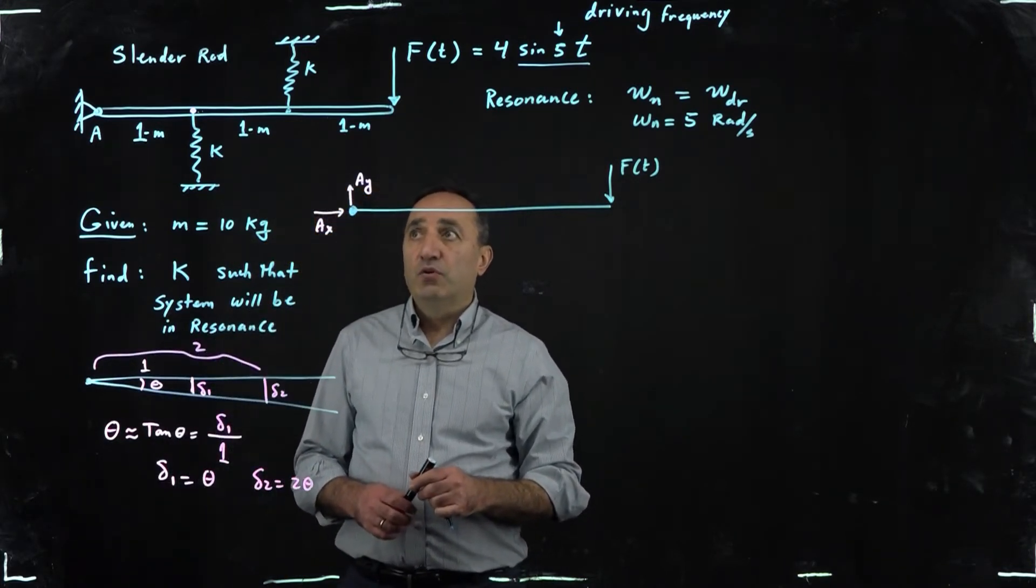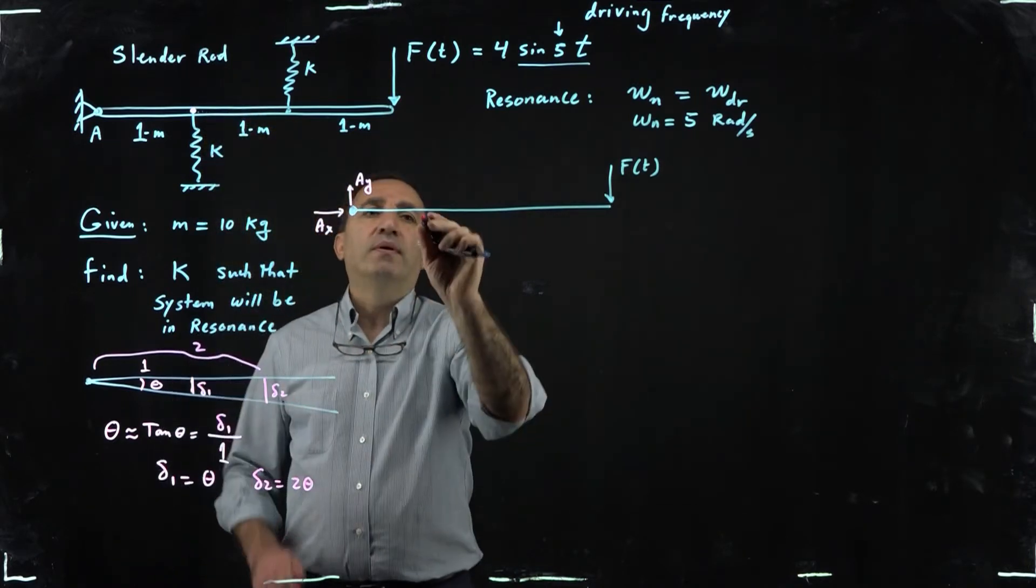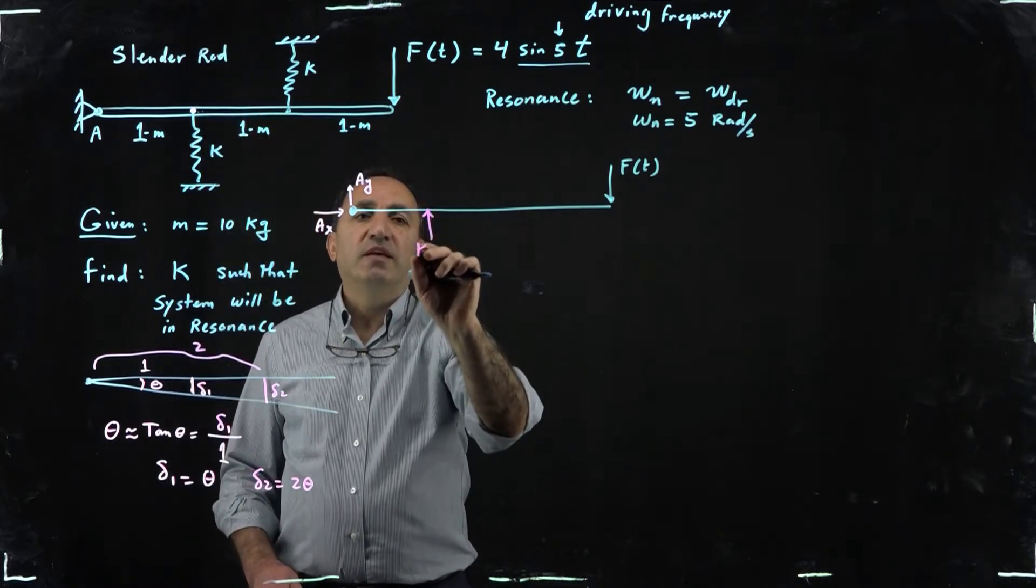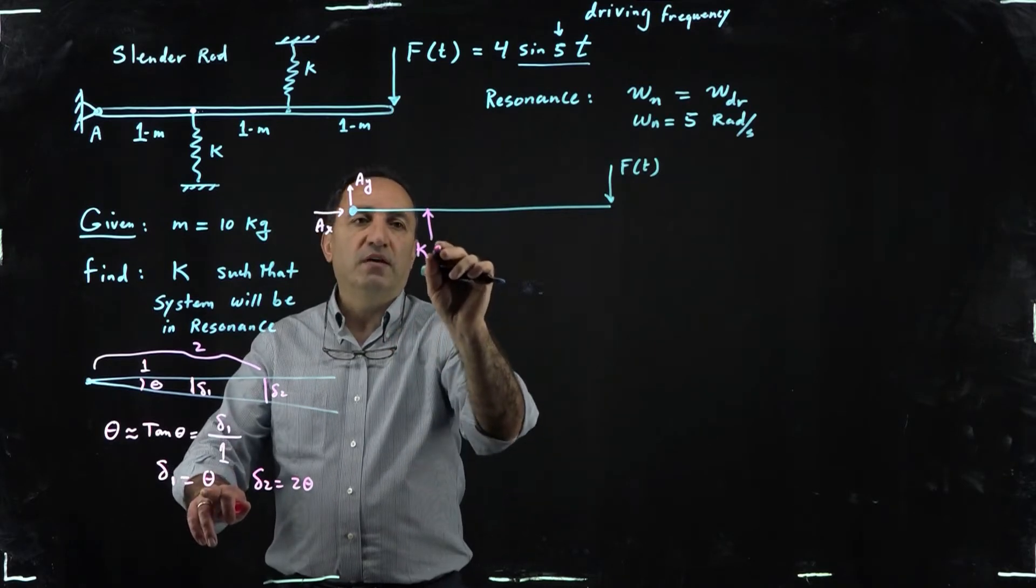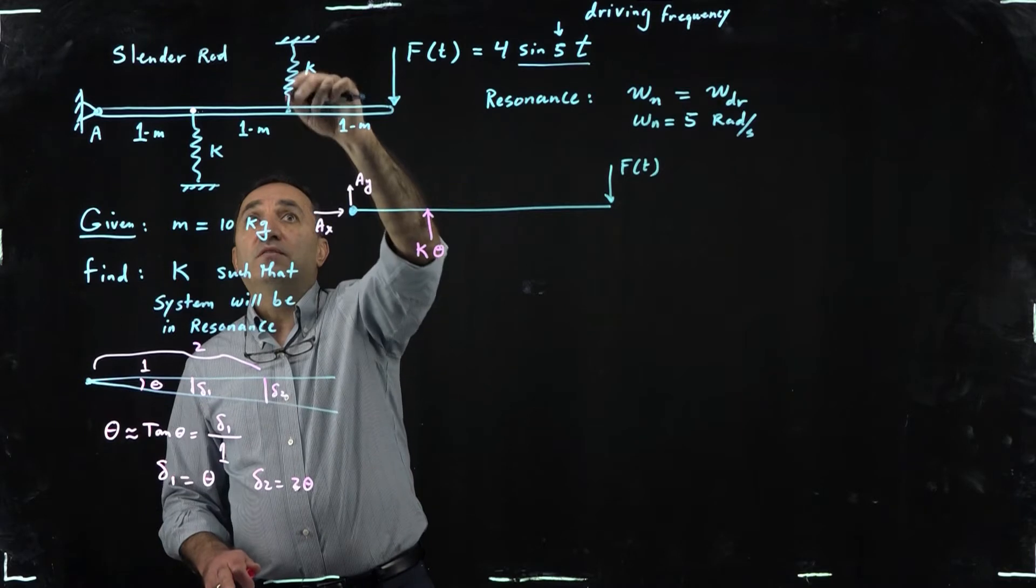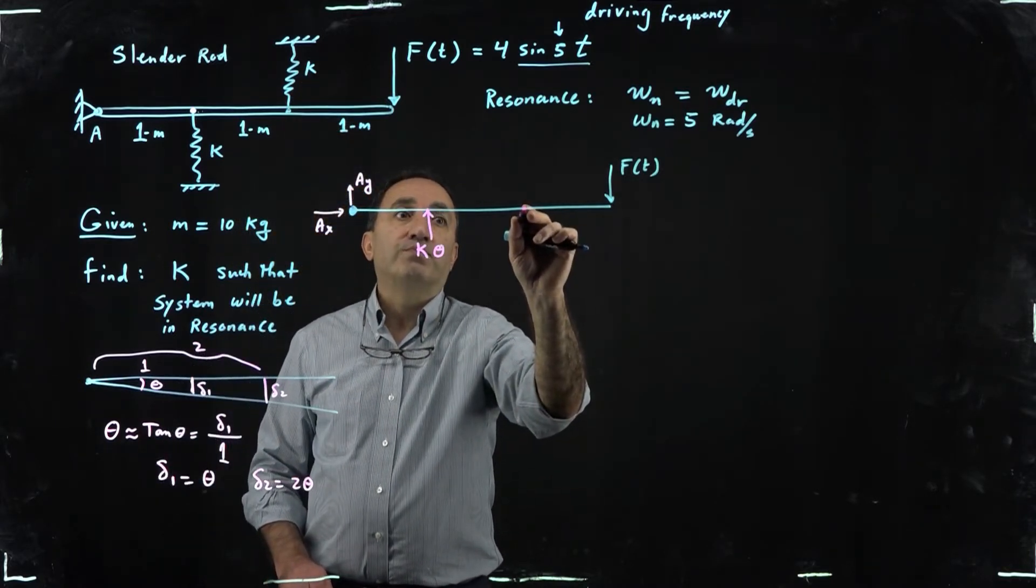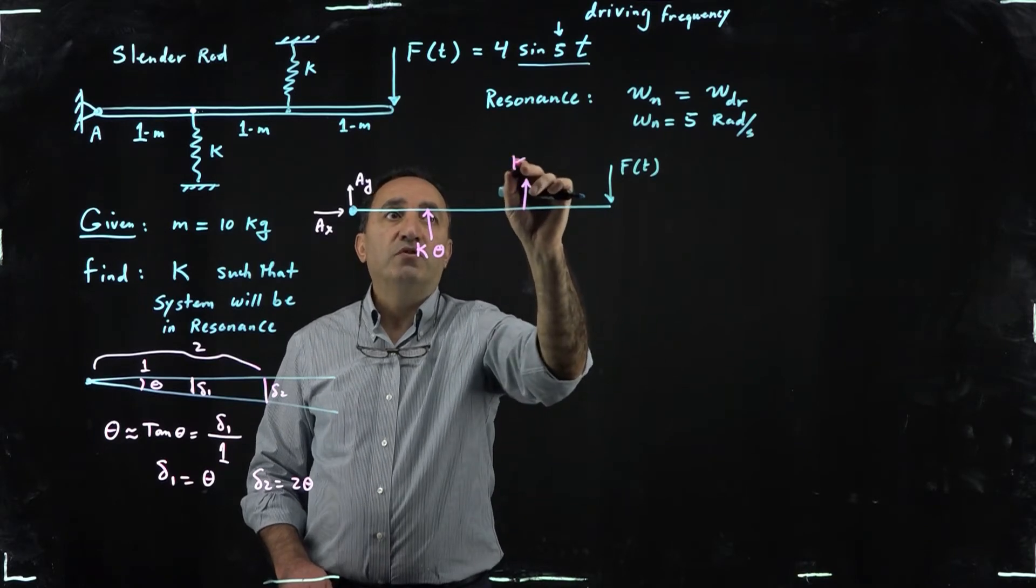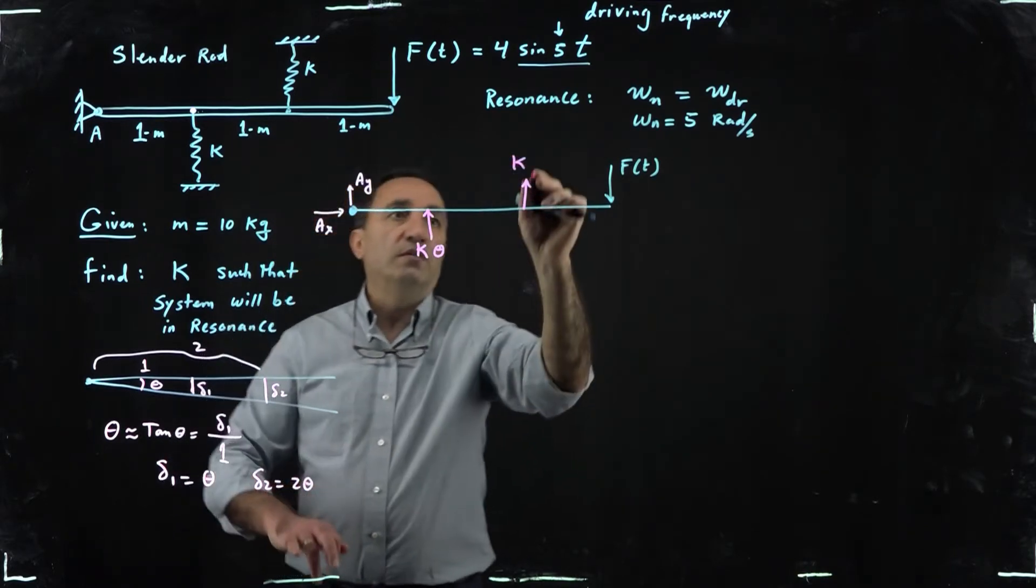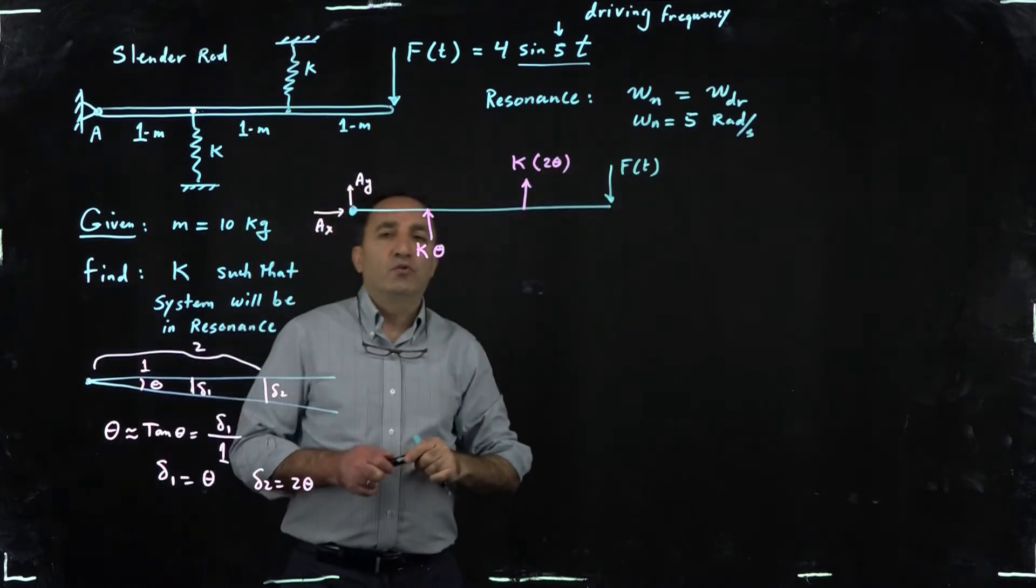So keep that in mind when you show the forces due to the spring. So for example, when this spring is compressed it's pushing back up and the force is K times one theta, right, and then this spring when it is stretched by delta two also pushes back up, but its force is going to be K times two theta.